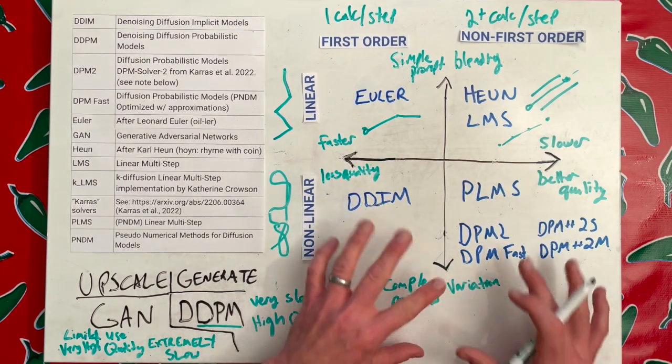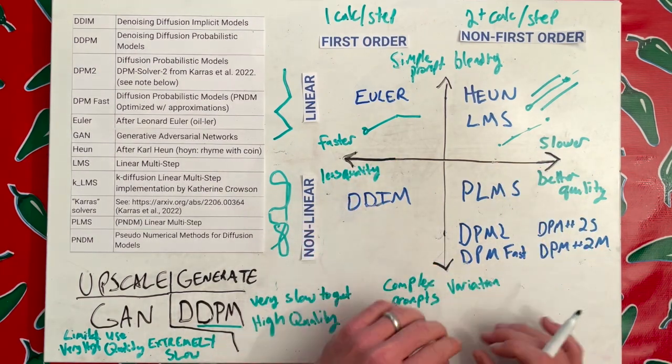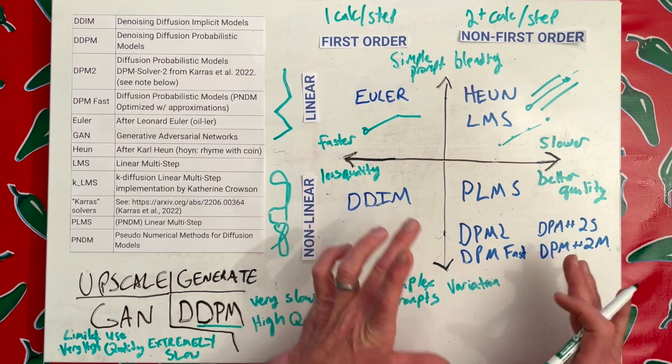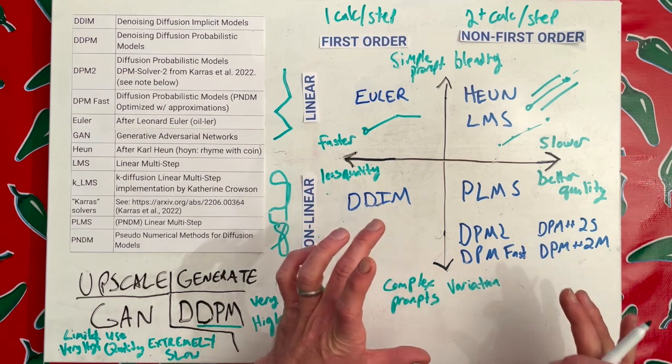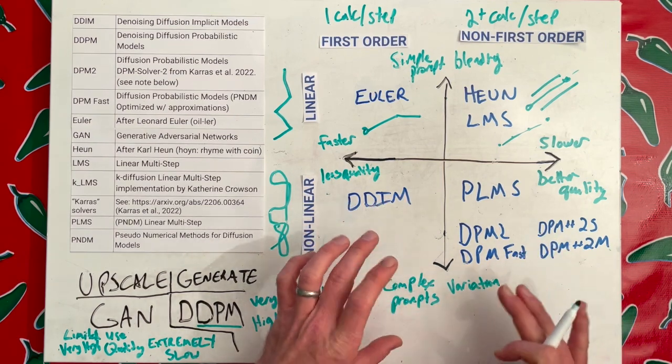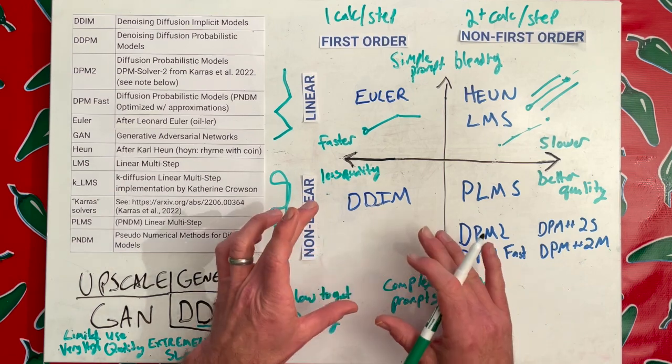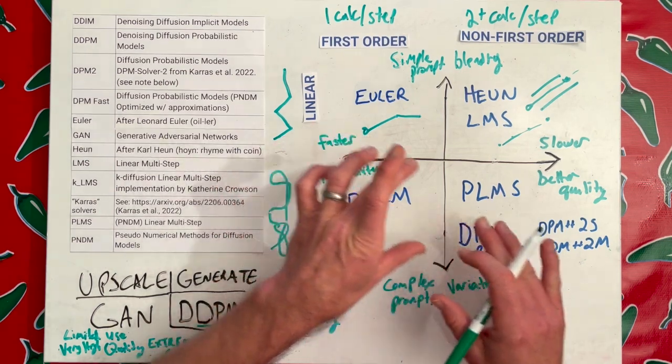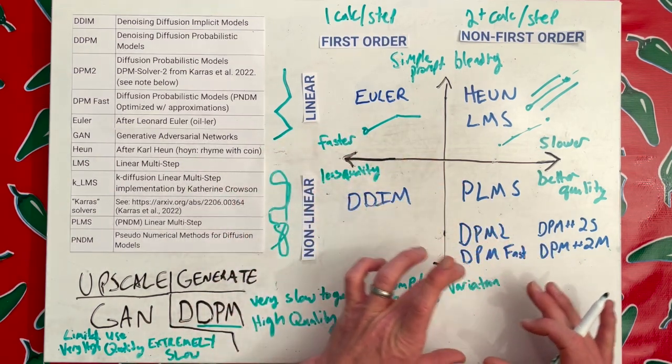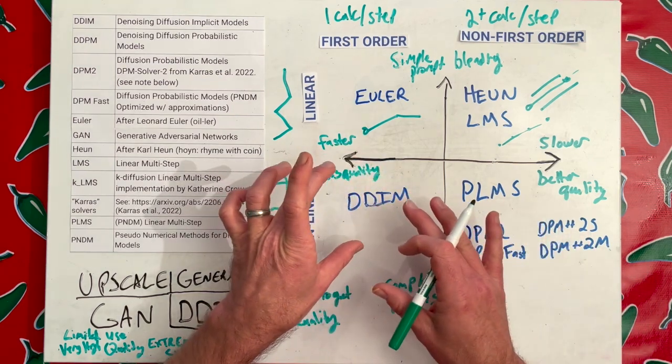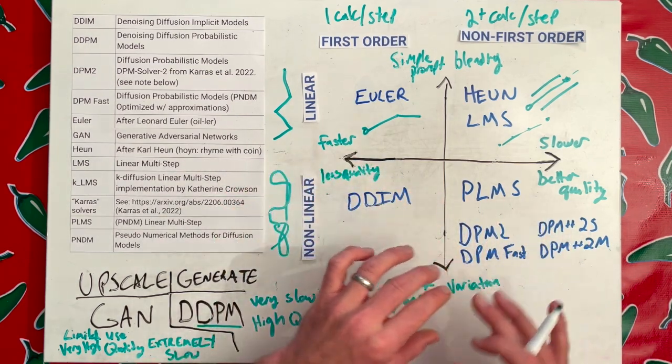These ones down here are denoisers, meaning that they remove the noise from the noisy image in the latent space to render out or pull out the image. If you remember from training, you started out with a pure image, you simulated diffusion until it was pure noise, then you learn to reverse the process until it was an image. Well, that is what these are doing. They are reversing the process.